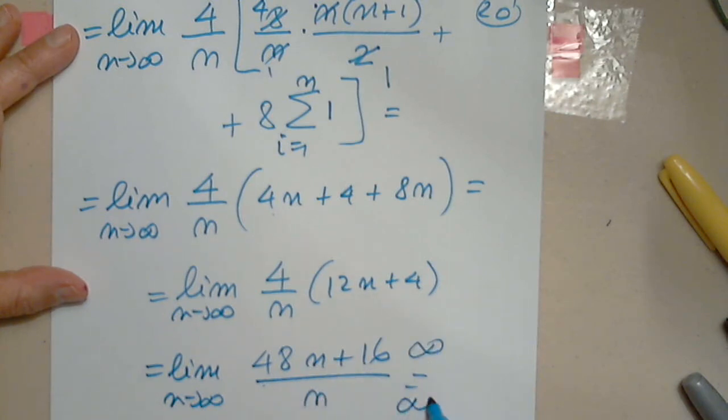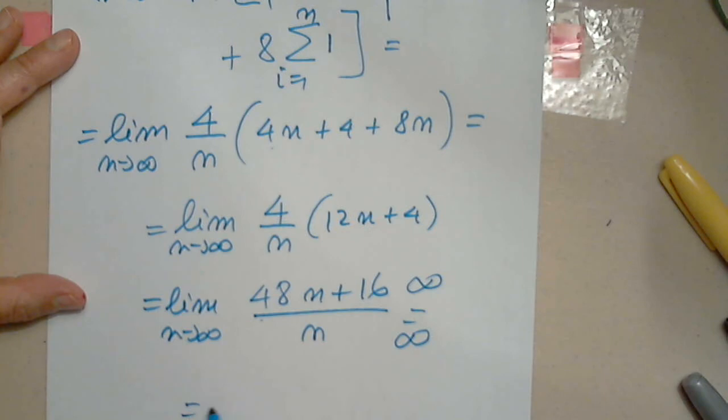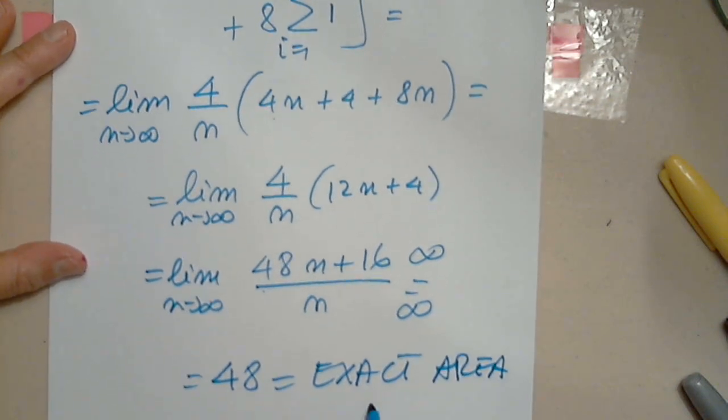Again, you can say infinity over infinity. Yes, but when I differentiate, I get 48. Exact area under the graph on the interval 2 comma 6.